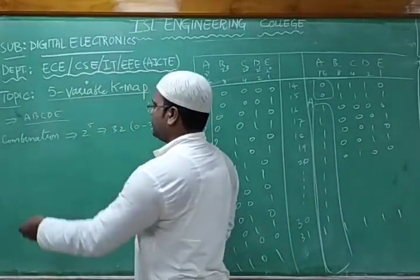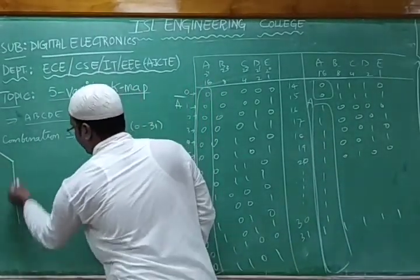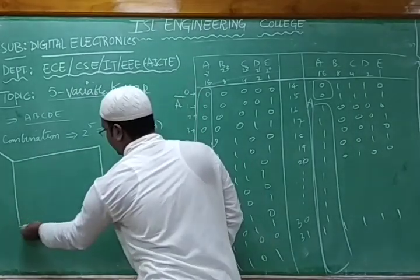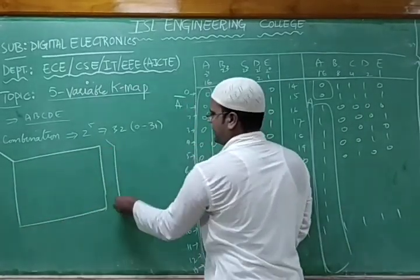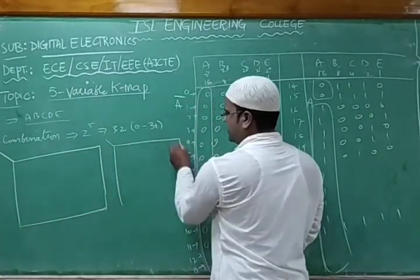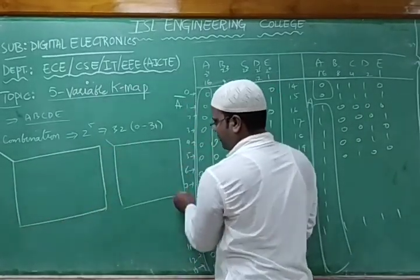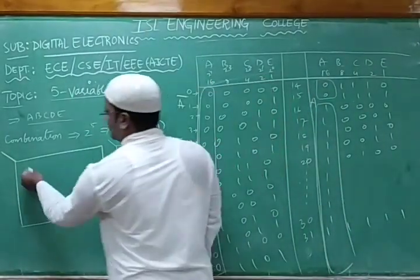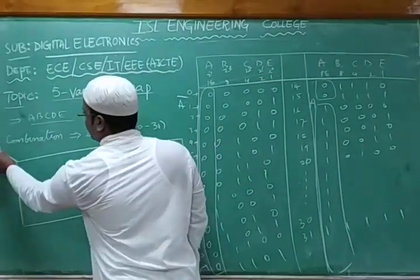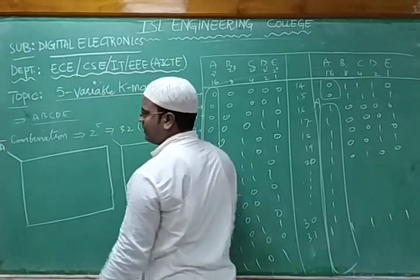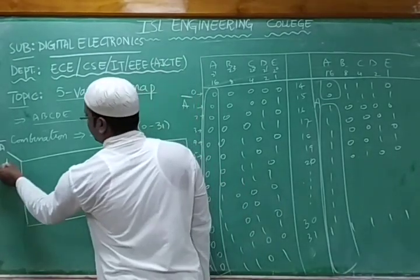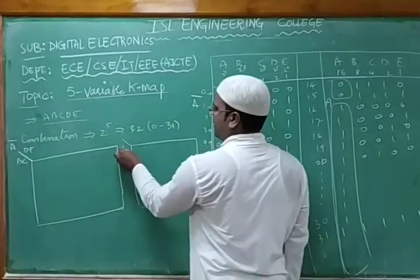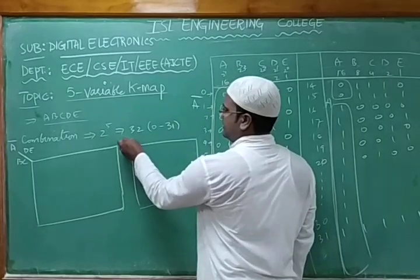We take two separate four-variable KMAPs. For the first one, we assume A=0 (A-bar), and write variables B, C, D, E. For the second one, we assume A=1, and again write B, C, D, E. The combination of B, C, D, E is exactly the same in both KMAPs.